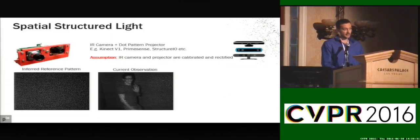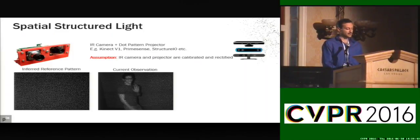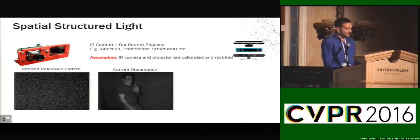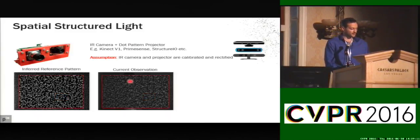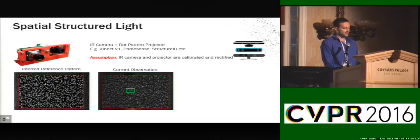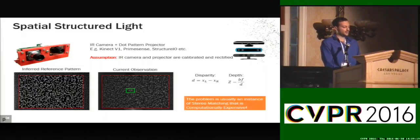Let's go back to spatial structured light. The setup is very simple: we have an IR camera and a dot pattern projector. The only assumption is that the IR camera and projector are calibrated and rectified. For this work we use basically a Kinect V1. The image Kinect gives you is what we call the current observation, but Kinect also has a hidden image — the reference pattern — which is the pattern projected by the projector. Looking at a particular section of these images, we see a dot structure, and if you want to predict depth for a particular pixel, people previously cast this into a stereo matching task, testing multiple hypotheses until finding the most correlated one — which is really expensive.